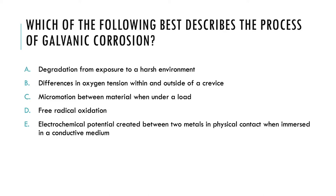Let's take a look at this question. Which of the following best describes the process of galvanic corrosion? A: Degradation from exposure to a harsh environment. B: Differences in oxygen tension within and outside of a crevice. C: Micromotion between material when under a load. D: Free radical oxidation. Or E: Electrochemical potential created between two metals in physical contact when immersed in a conductive medium.